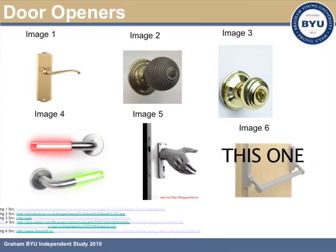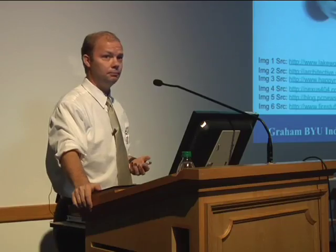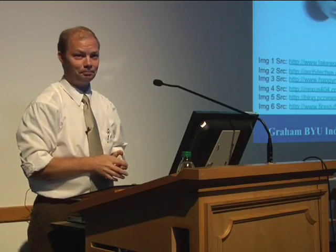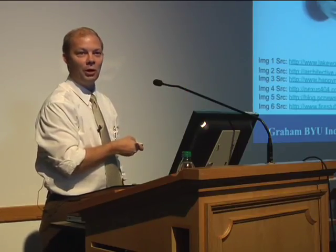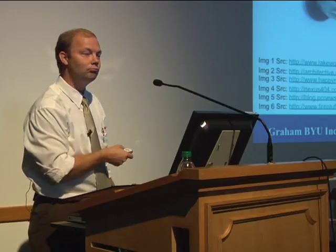How about this one right here? We see these at the back of this building, this room. What are the affordances here? It tells you whether to pull or push. By looking at it, it's obvious that you don't pull on this doorknob. And if you're carrying a lot of things, you can still open it.